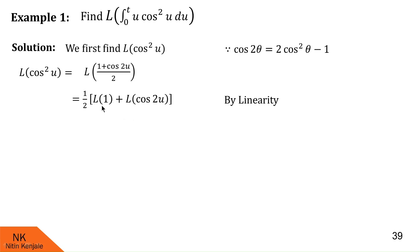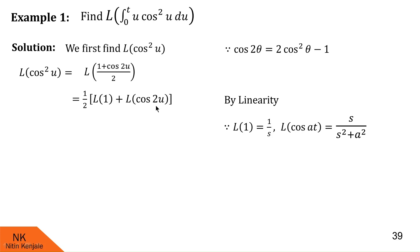Now, we write L{1} using the formula L{1} = 1/s. Similarly, L{cos 2u} can be written using the formula L{cos at} = s/(s² + a²). In this particular case, a = 2. So we write L{1} = 1/s and L{cos 2u} = s/(s² + 4). So this is L{cos²u}.